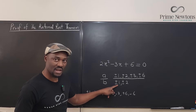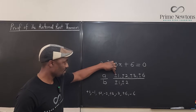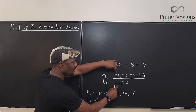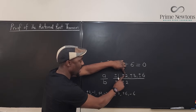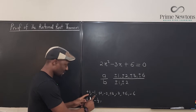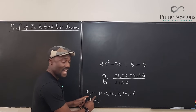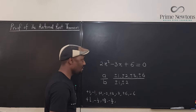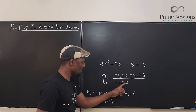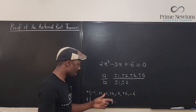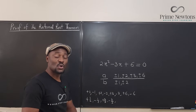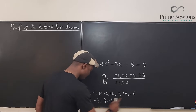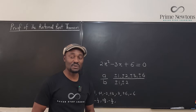Those are the options when the denominator is 1. Now, what if the denominator is 2? We get plus 1 over 2 or minus 1 over 2. Then 2 over 2 gives us 1 again, so we don't need to repeat that. Then plus 3 over 2 or minus 3 over 2. And plus 6 over 2 or minus 6 over 2, which gives us 3 — already listed. So all the possible rational roots give us 12 total possible rational roots.